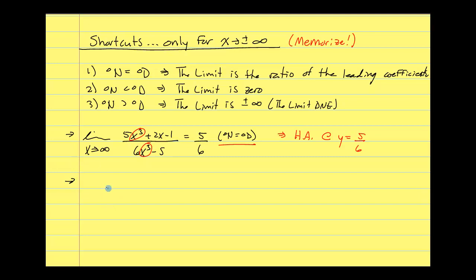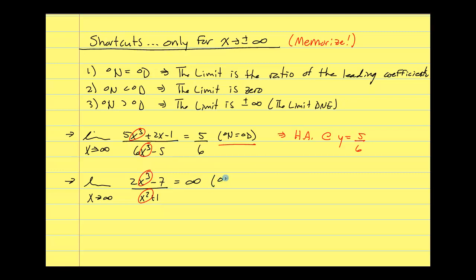Let's look at the limit as x approaches infinity of 2x cubed minus 7 over x squared plus 1. Looking at highest powers: x cubed over x squared — the degree in the numerator is greater than the degree in the denominator. The numerator is increasing faster than the denominator, so this is trekking off toward infinity. Justification: degree in the numerator is greater than degree in the denominator. Therefore the limit does not exist — no horizontal asymptote.